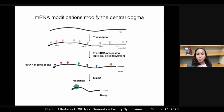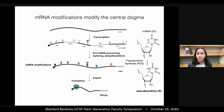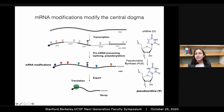However, the majority of these modifications we still don't know their functions. I've been particularly interested in one of these — pseudouridine — which is an isomer of the canonical base uridine, and this isomerization is catalyzed by the pseudouridine synthases.